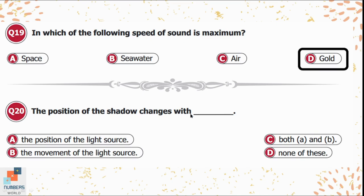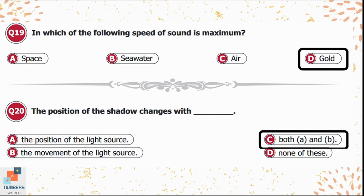Question 20: The position of the shadow changes with — A) the position of the light source, B) the movement of the light source, C) both A and B, D) none of these. If we change the position of the light source or move it, the shadow's position changes accordingly. Option C — both A and B — is correct.